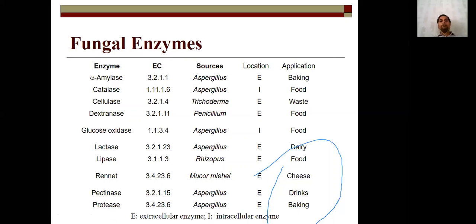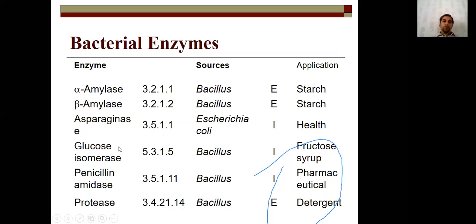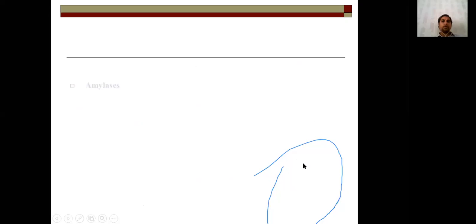Applications of enzymes and where they are applied. Bacterial enzymes include: Alpha-amylase from Bacillus — extracellular, for starch degradation. Beta-amylase from Bacillus — starch degradation. Asparaginase from Escherichia coli — intracellular, used for health applications. Glucose isomerase from Bacillus — intracellular, for fructose syrup production. Penicillin amidase from Bacillus — intracellular, pharmaceutical use. Many enzymes are available with important industrial and medical applications.